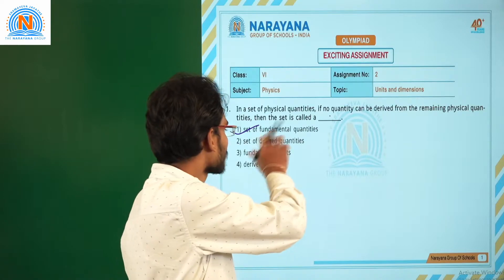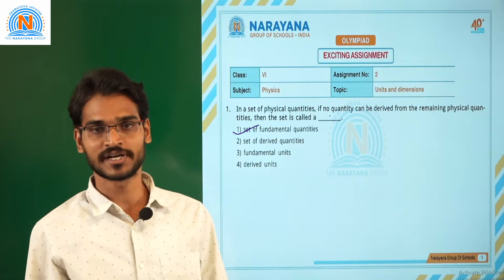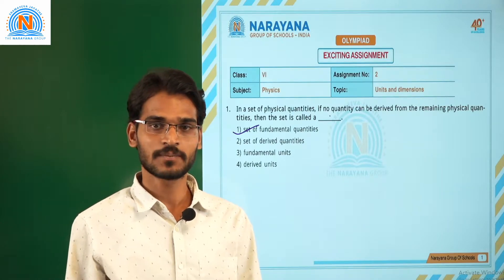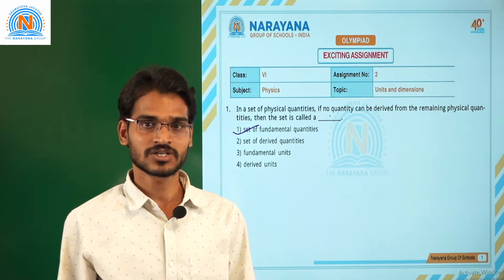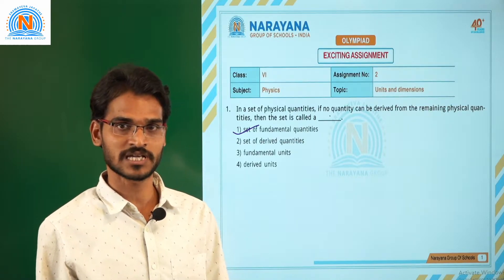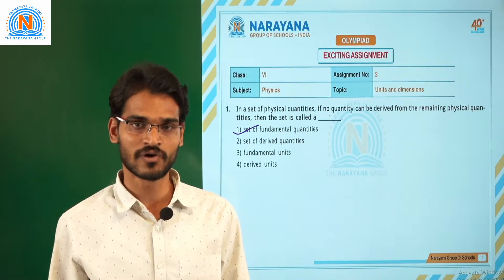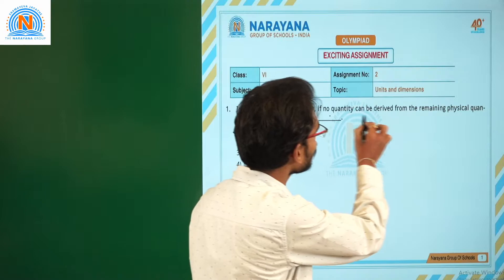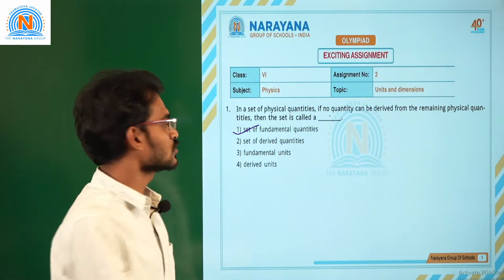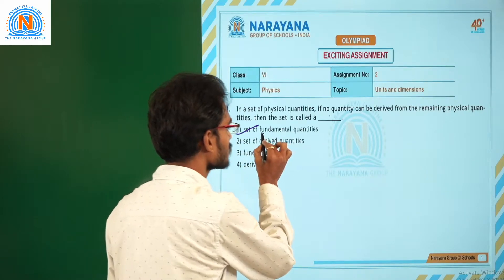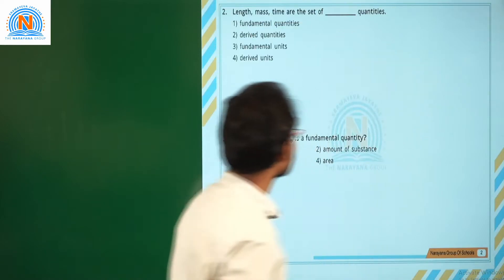Why are we choosing the first option only? Because we have seven types of fundamental physical quantities. They are length, mass, time, electric current, temperature, and amount of substance. These are the seven fundamental physical quantities, independent of all other quantities. So those quantities only we can call fundamental physical quantities. Let us move on to the second question.